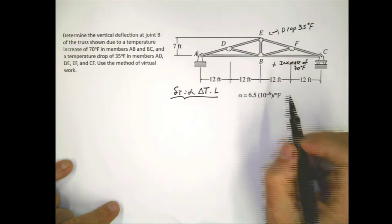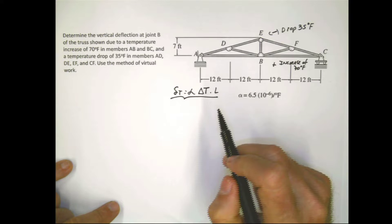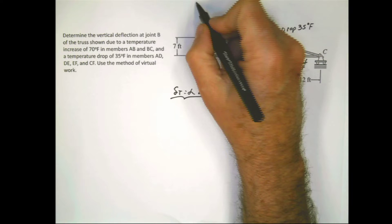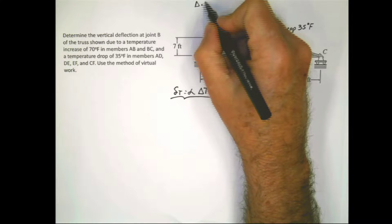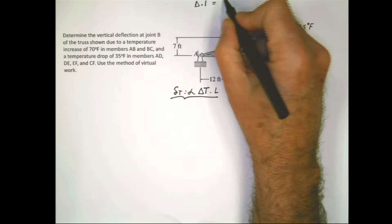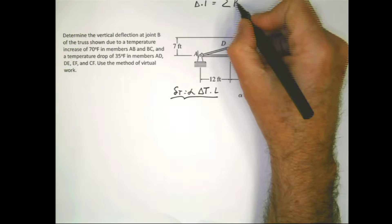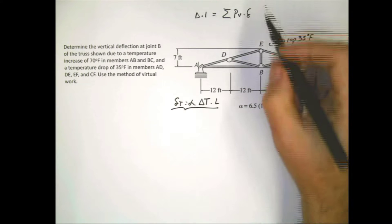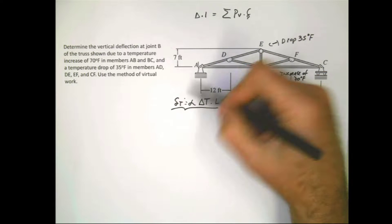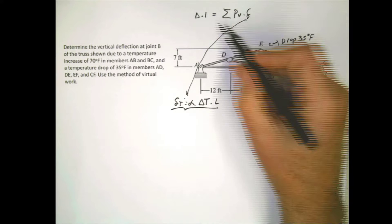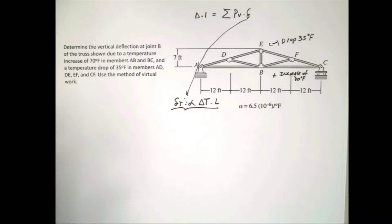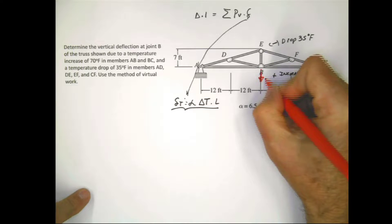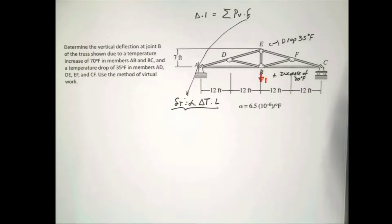These are going to be the real deformations in the formula. Remember, virtual work, I always like to put the principle of virtual work. The external real displacement multiplied by the external virtual load has to be equal to the summation of all the interior virtual forces multiplied by the real displacement. That's basically what is happening. And the virtual loads are going to be produced by placing at the joint that we want to study, which is B, a unit virtual load over there.